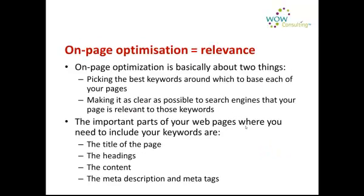Now there are two dimensions to SEO. The first is known as on-page optimisation and this is all about the relevance of your content. There are two things we are doing here: first of all we're picking the best keywords around which to structure the content of the website, and secondly we're making it as clear as possible to the search engines that our pages are relevant to those keywords.